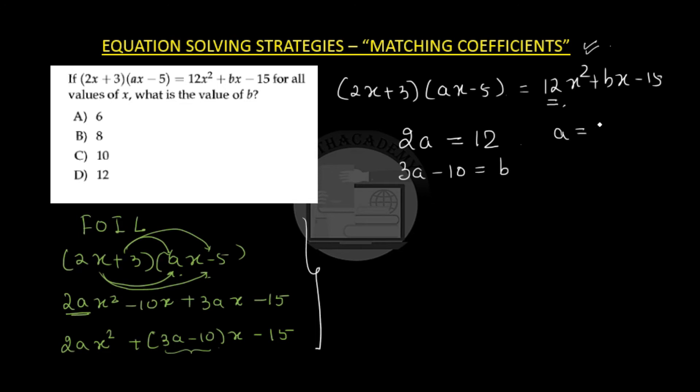So from here we get a as 6 and I will put a as 6 here to get b as 3 times 6 minus 10 which gives me an answer 8. Isn't it easy? Let us go to one more example.